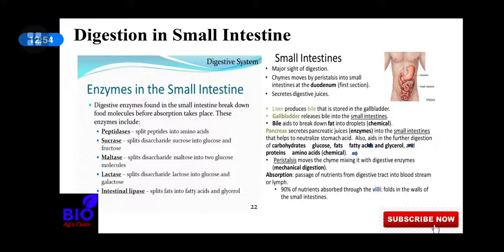So that is all about the small intestine. All kinds of carbohydrates, proteins, and lipids — all food elements — are digested here. After digestion, absorption of food also starts from this small intestine, which I will discuss shortly.